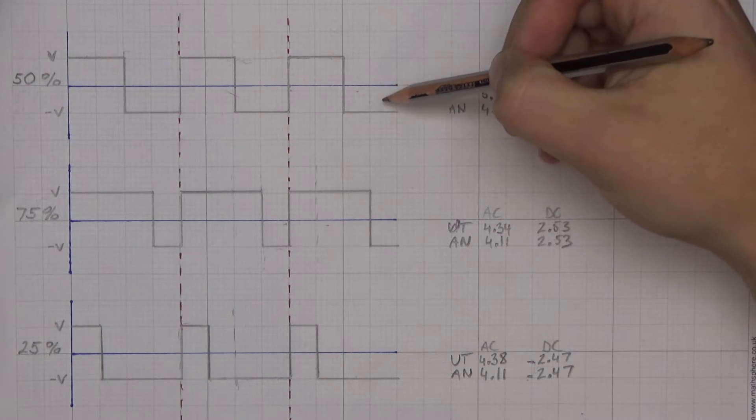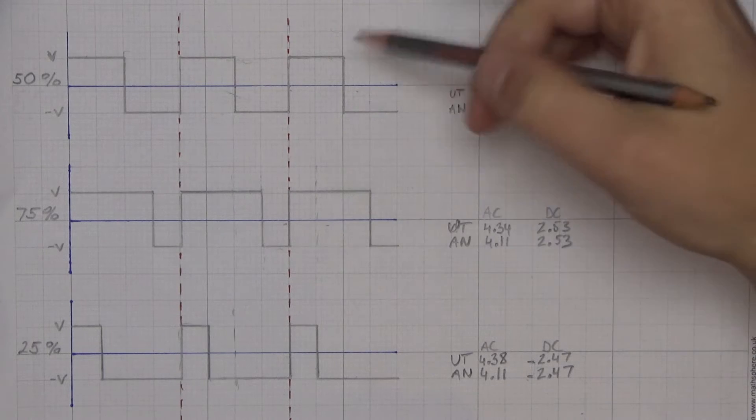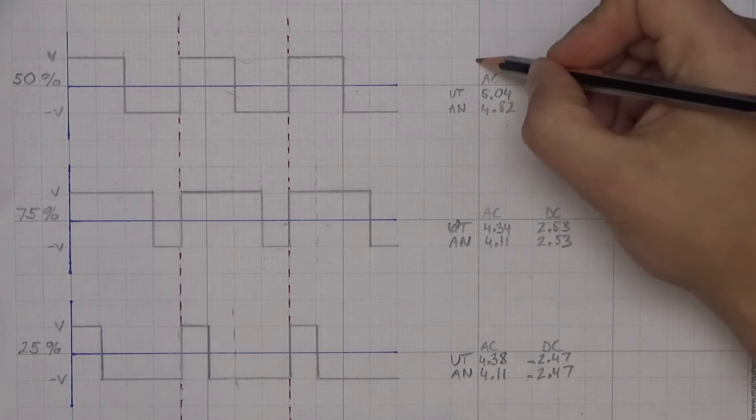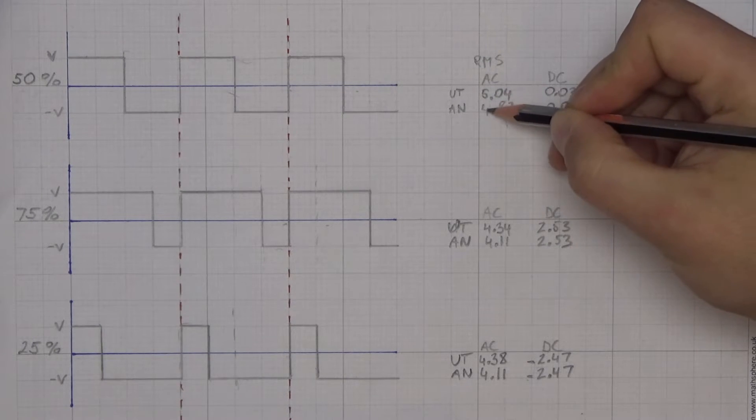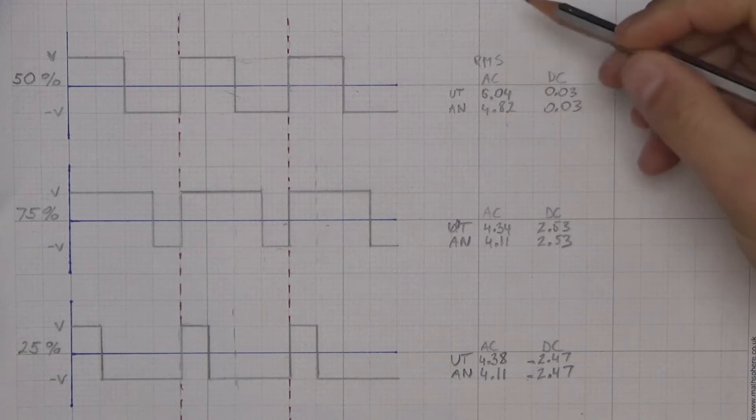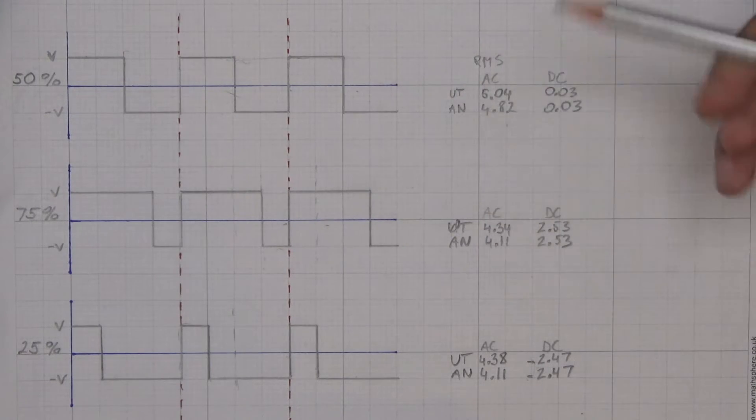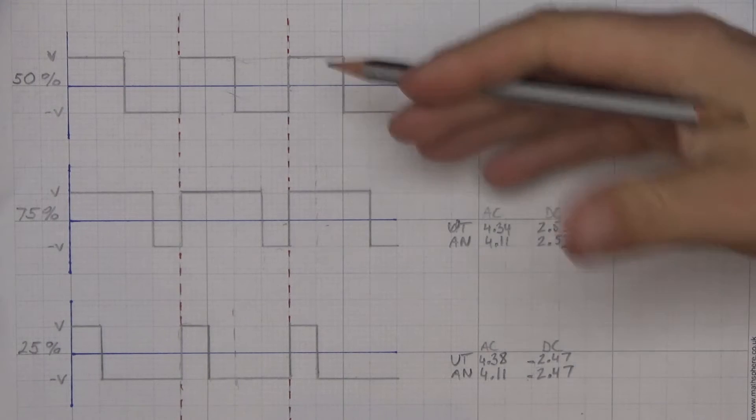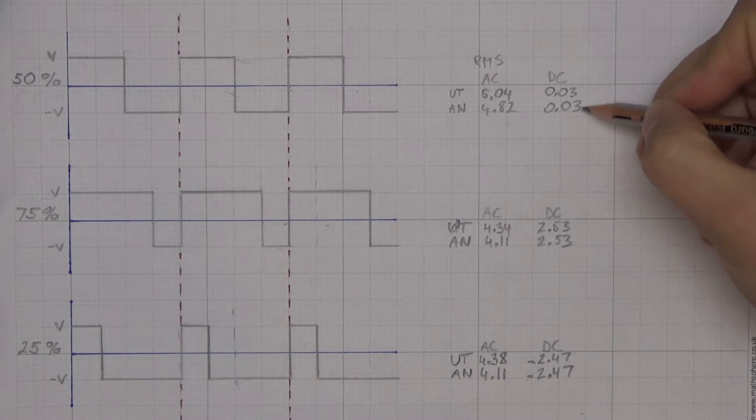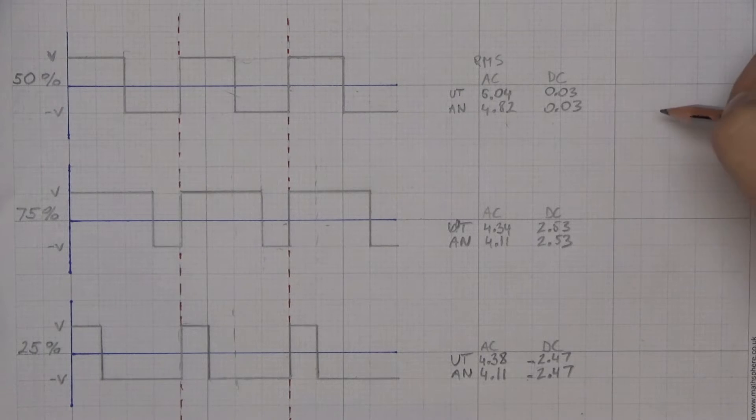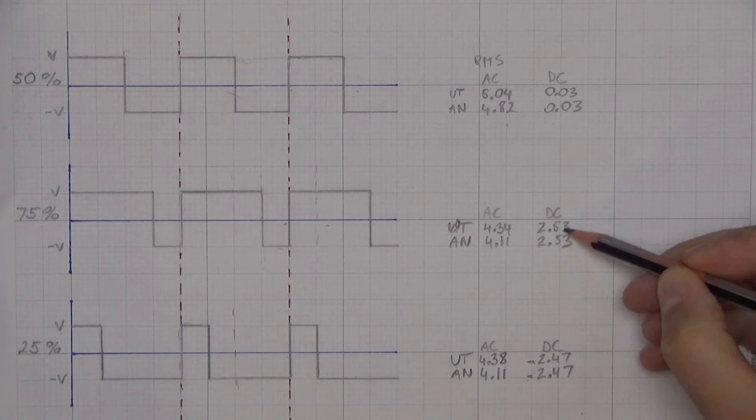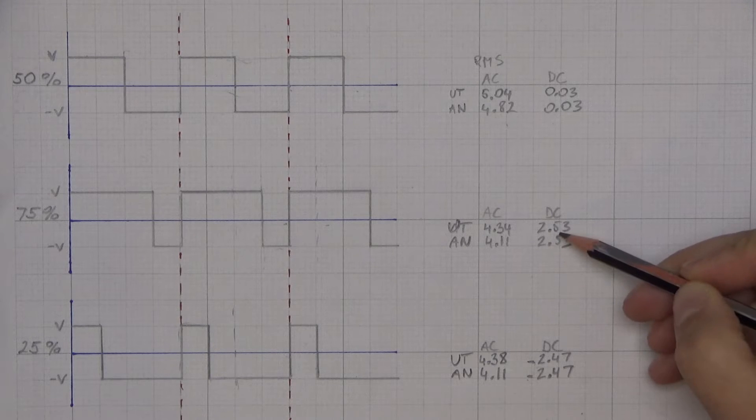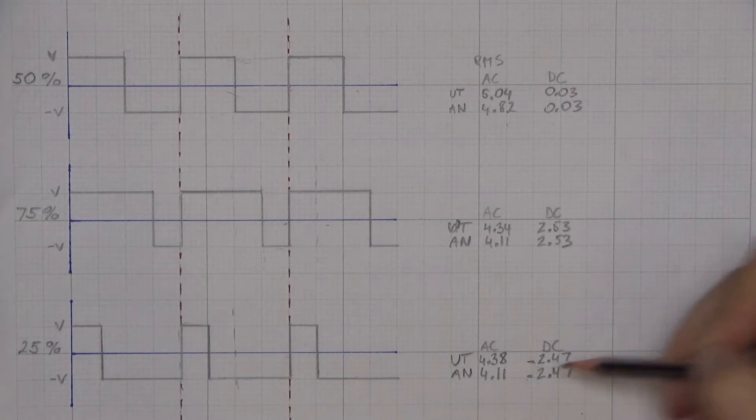So as it turns out, a square wave can have a DC component to it if it's not a 50% symmetrical waveform. In this case, we've measured RMS—those all are RMS measurements—and we've measured 5.04 and 4.82. That's, I guess, within a margin of error of what meters can have on such a low amplitude signal. And the DC values were in both cases close to nothing.